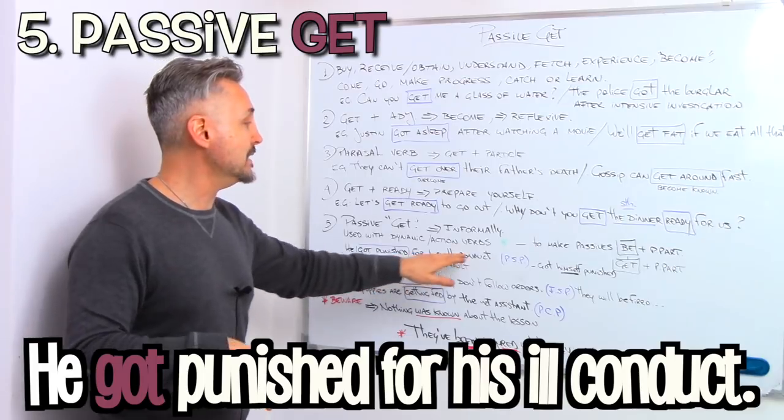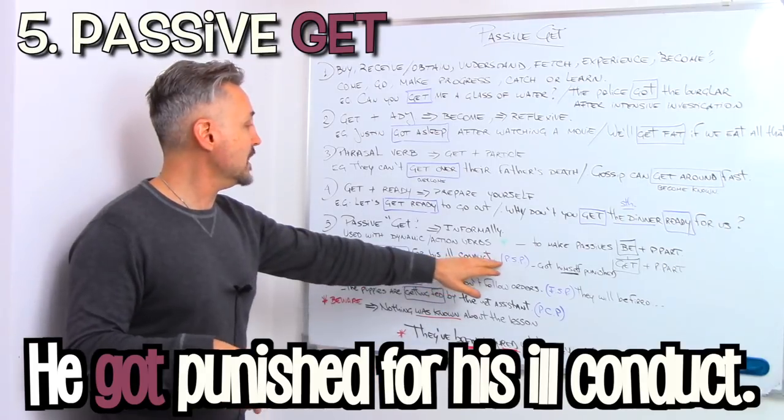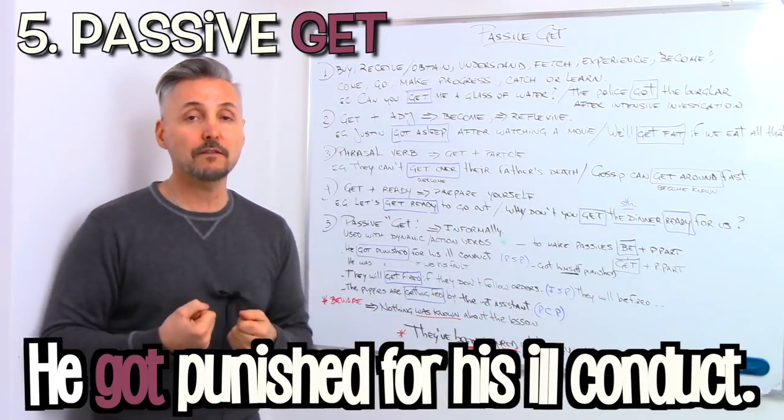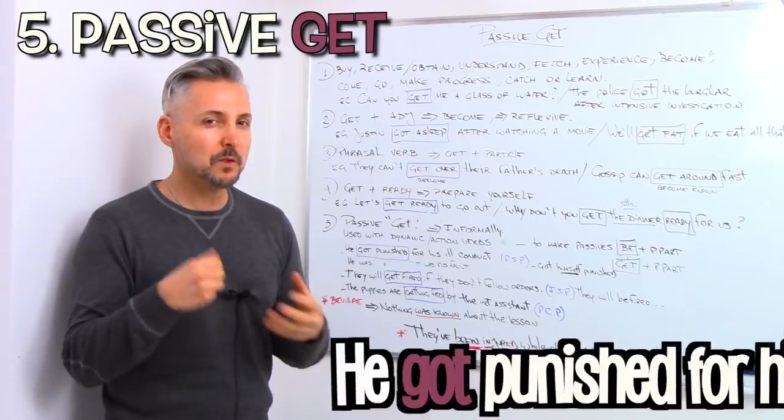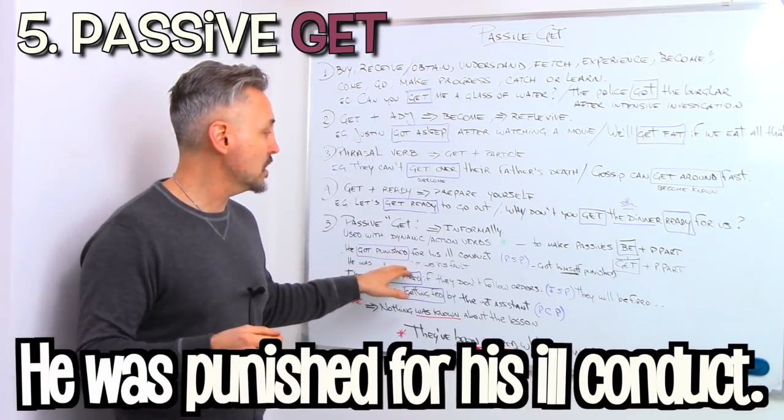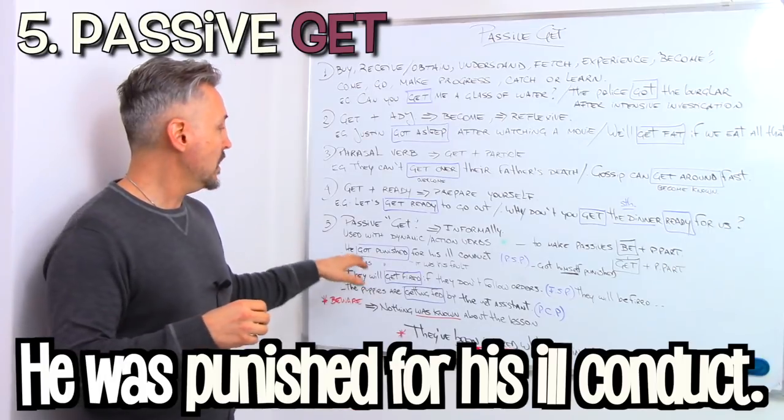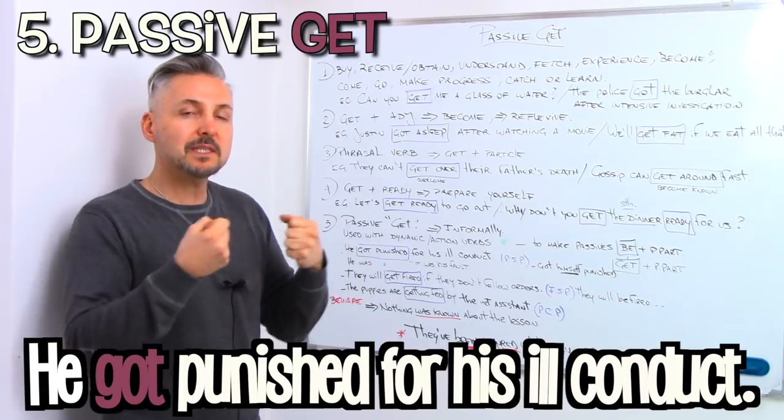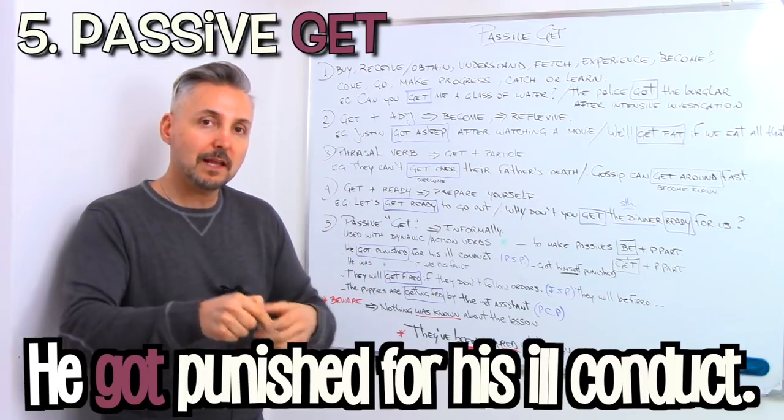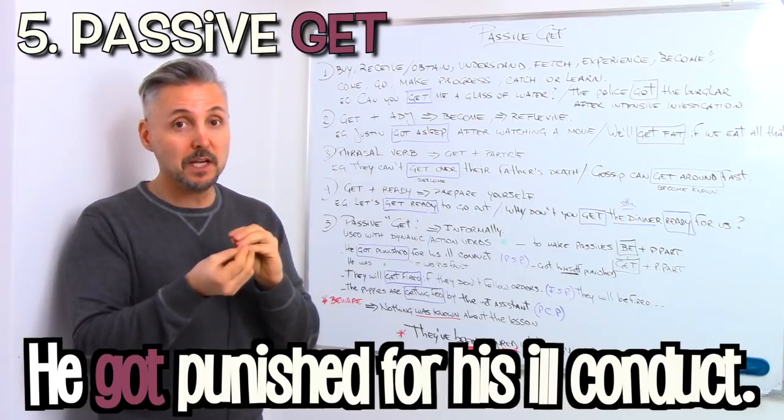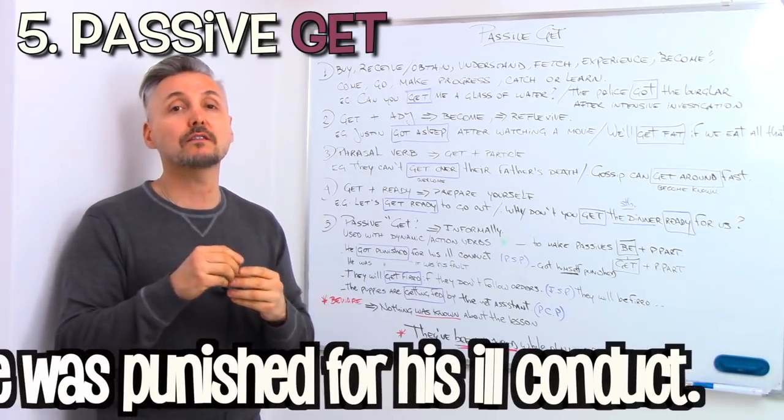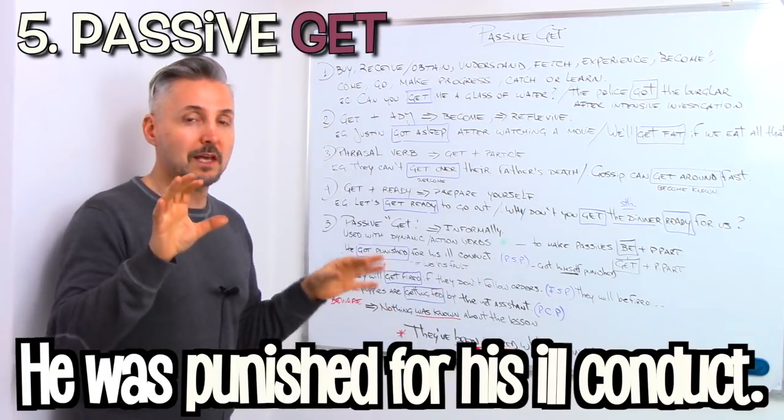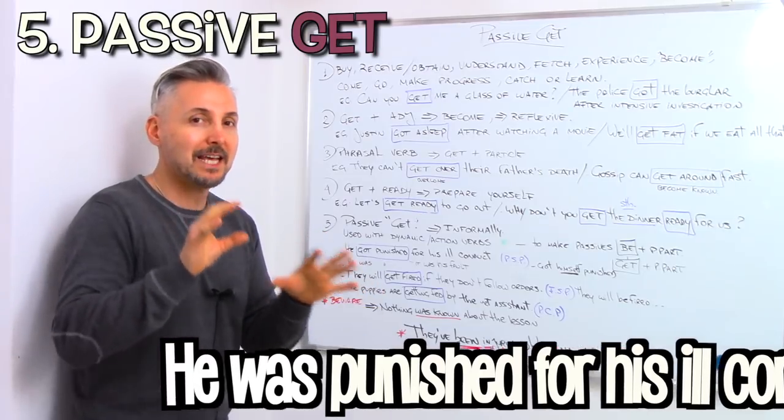He got punished for his ill conduct. So in this case, we have the past simple passive. See, he got himself punished, as opposed to he was punished for his ill conduct. So in the first case, we have like, kind of, he got himself punished. So it was his fault that he got punished. He got punished, he got himself punished, instead of he was punished for his ill conduct. So the meaning can change, can slightly change.